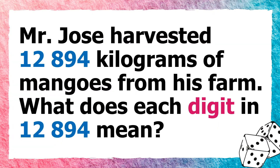And now we are all set. Let us start with this word problem: Mr. Jose harvested 12,894 kilograms of mangoes from his farm. What does each digit in 12,894 mean?